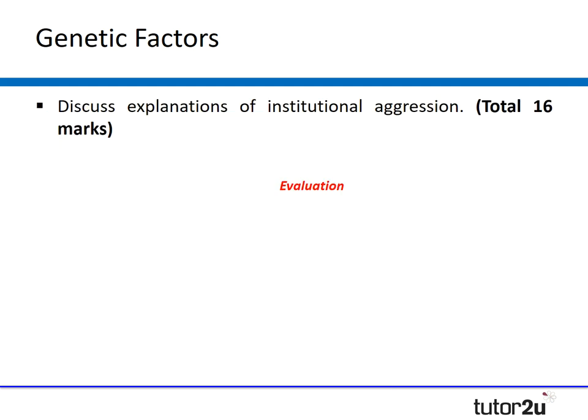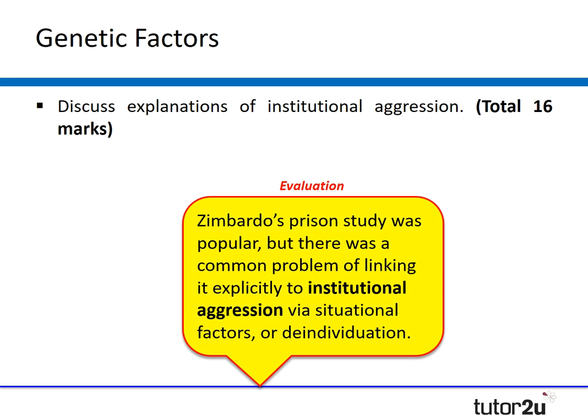The fifth question: discuss explanations of institutional aggression. A similar problem arose with Zimbardo's study — many students use it as an explanation of institutional aggression, but go into way too much detail about aims, method, results, and conclusion without linking back to the question, and more importantly to the explanations of situational factors versus de-individuation. Students can't get into the habit of writing loads of detail about a study if it's not answering the question, as it's not creditworthy. These five examiner reports are always useful for working backwards to inform our teaching.